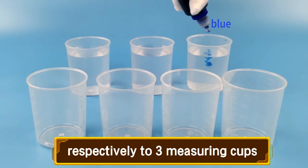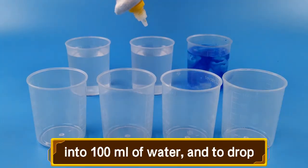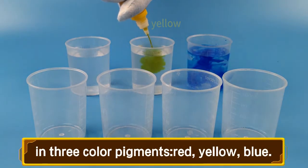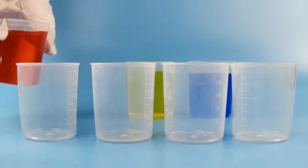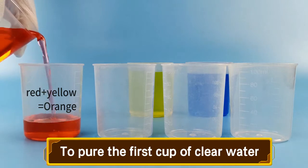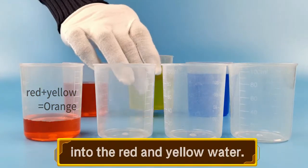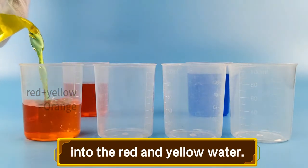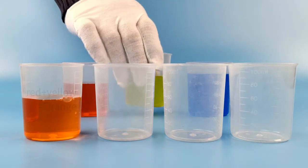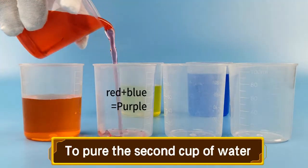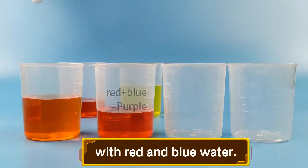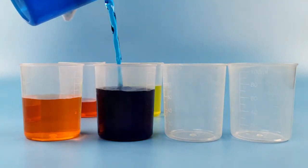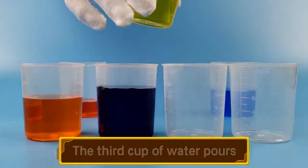Into 100 milliliters of water, drop in three color pigments: red, yellow, and blue. Pour the first cup of clear water into the red and yellow water. Pour the second cup of water with red and blue water.